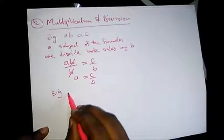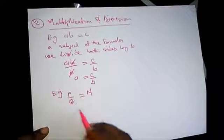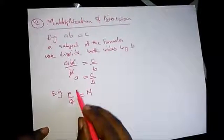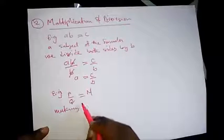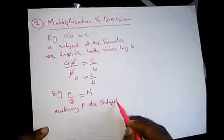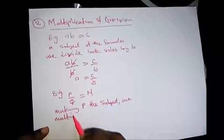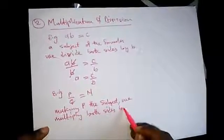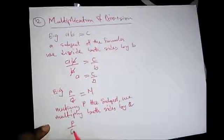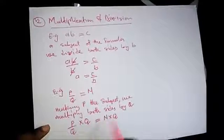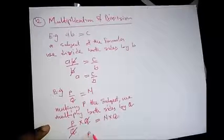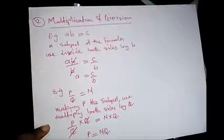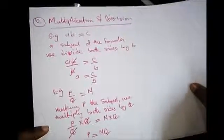Now if we have a division operation — for example p over q equal to n — making p the subject of the formula, we multiply both sides by q. So we have p over q multiplied by q equal to n multiplied by q. The q cancels out and we're left with p equal to nq. These are operations involving change of subject with multiplication and division.